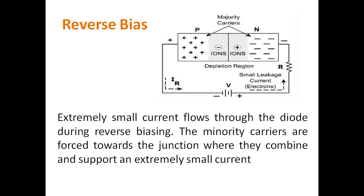When a diode is connected in reverse bias, an extremely small current flows through the diode. This current is due to the minority carriers present in the P-layer and N-layer — the minority carriers in the P-layer are electrons and in the N-layer are holes. In reverse bias, this very small current is the reverse saturation current, in the range of microamperes.